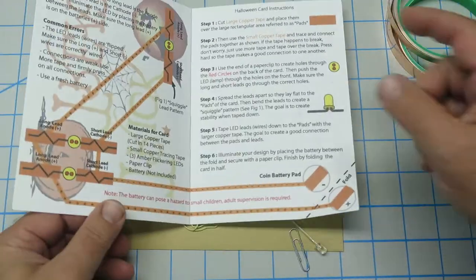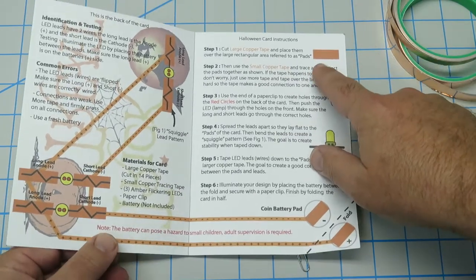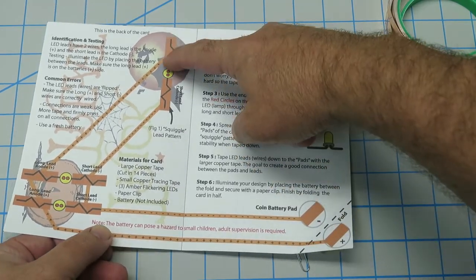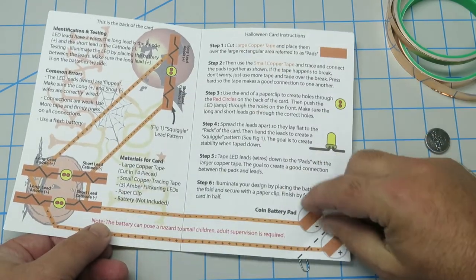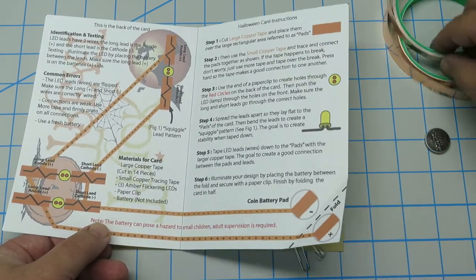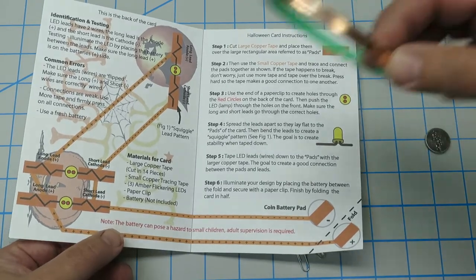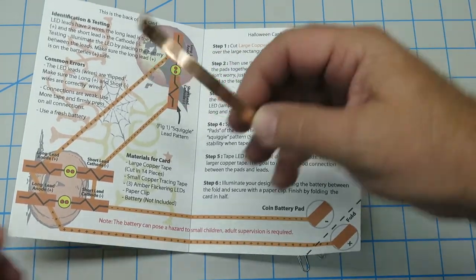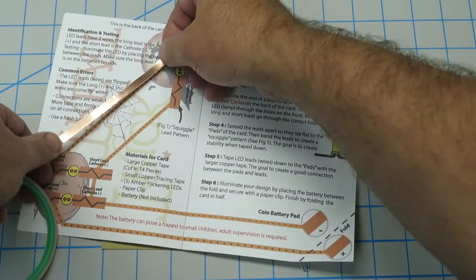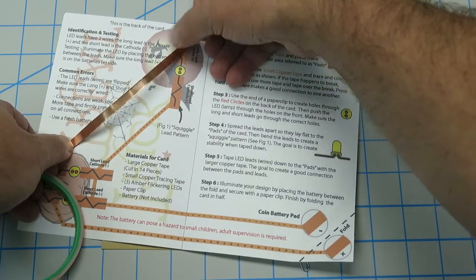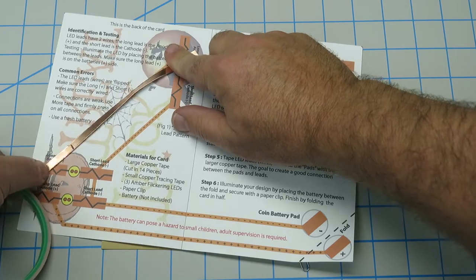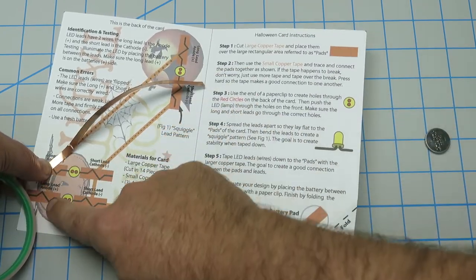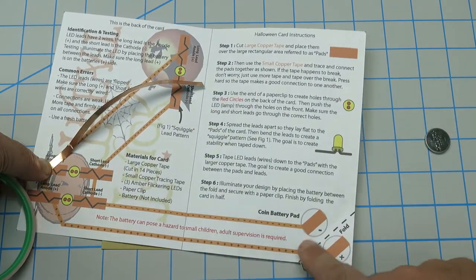So the first things that we would do is we'd create these pads we see. You put a pad down there, there, here, here, here, and here, as well as here and there. And you're going to use the large tape for that. The second thing we're going to do after that is overlap this tape over that lead, over the pad that we just created and run that to this pad, to this pad, and around to this pad.